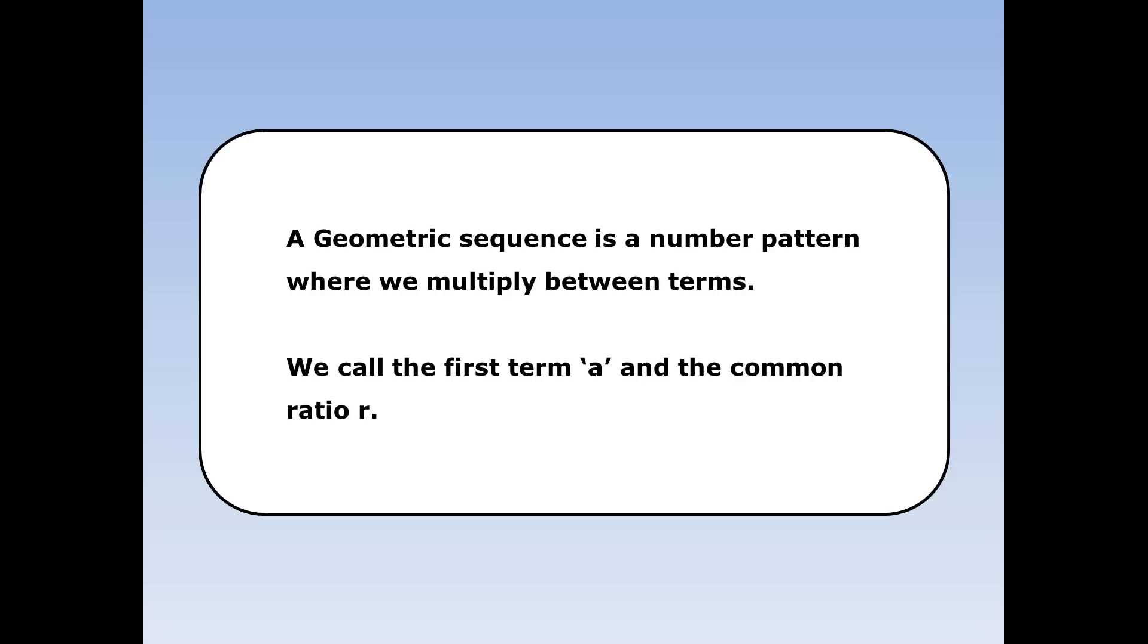A geometric sequence is a number pattern where we multiply between terms. We call the first term 'a' and the common ratio 'r'.